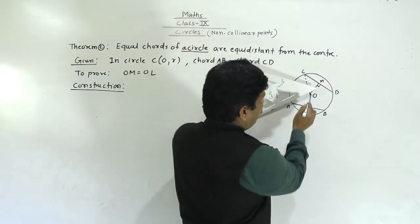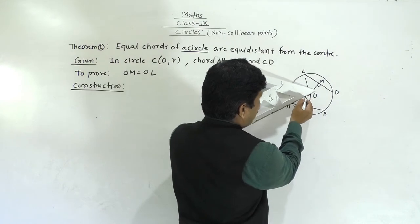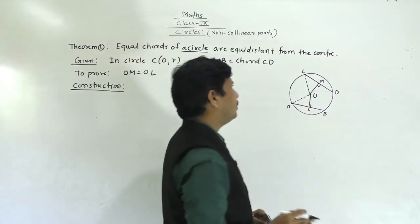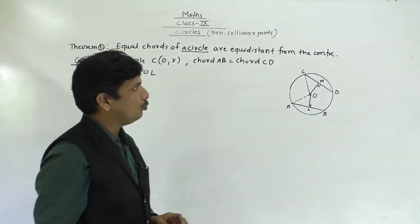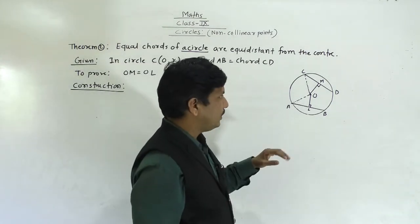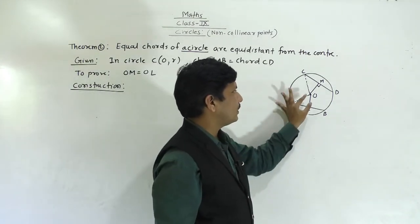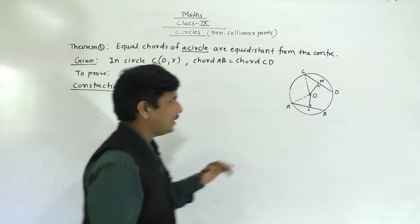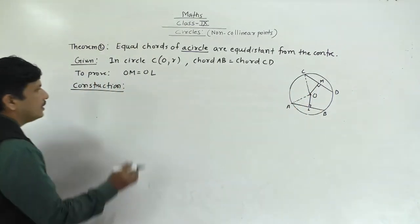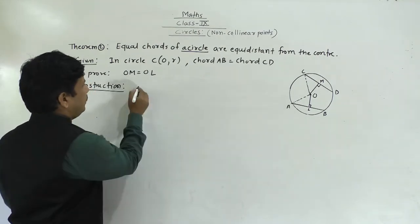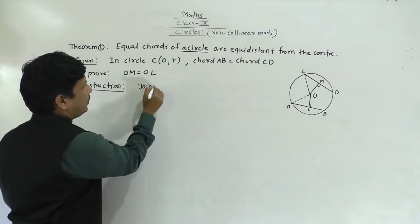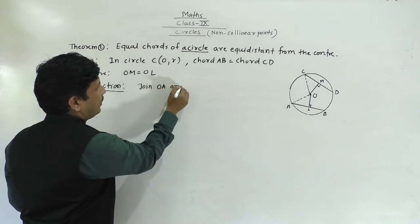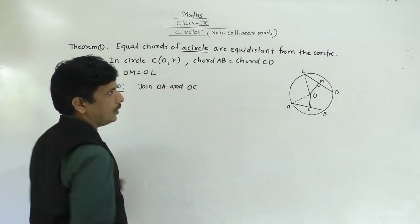In triangle OAL and triangle OCM: OA and OC are radii of the same circle, so OA equals OC. The perpendicular from the center bisects the chord — OL is perpendicular to AB and OM is perpendicular to CD — so both angles OLA and OMC are 90 degrees.